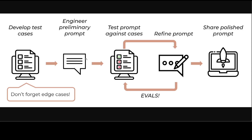Looking at this lifecycle diagram on screen, this is a principled test-driven development approach to ensure optimal prompt performance, and the credit for this goes to Anthropic. You should always start with defining your task and success criteria, as it is the most crucial step — clearly defining the specific task you want the model to perform.